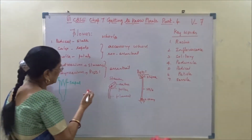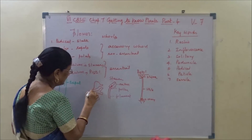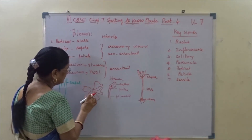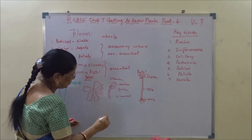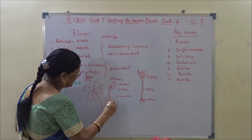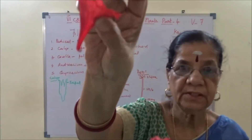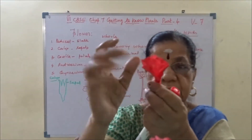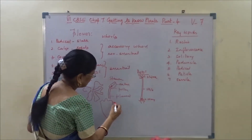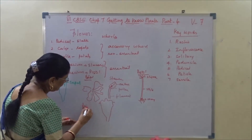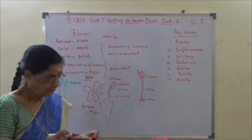The petals, when arranged, look like this. A single petal, when drawn, will have a somewhat wavy tip — that is called fringed margin. This is known as fringed margin. This is the initial structure of the flower.